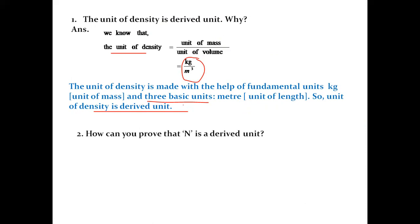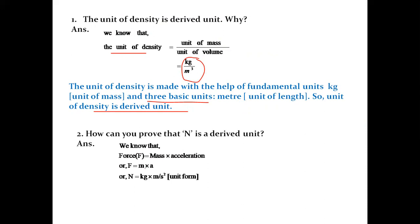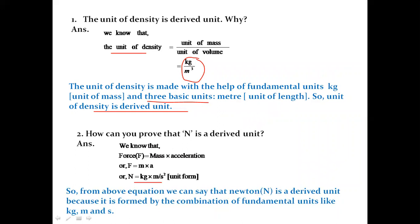How can you prove that Newton is a derived unit? We know that force equals mass multiplied by acceleration. To find the unit of force, we need the unit of mass and acceleration, that is kilogram multiplied by meter per second squared. So Newton is a derived unit because it is formed by the combination of fundamental units: kilogram, meter, and second.